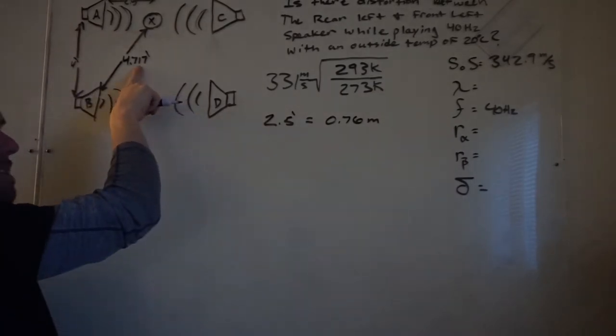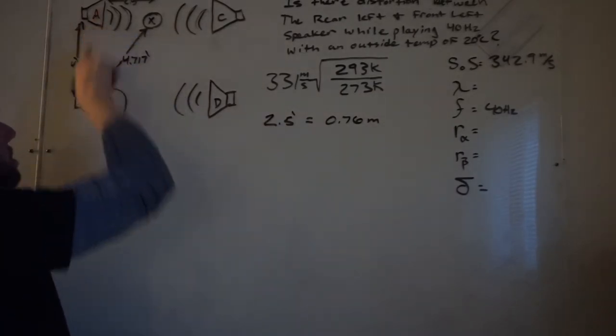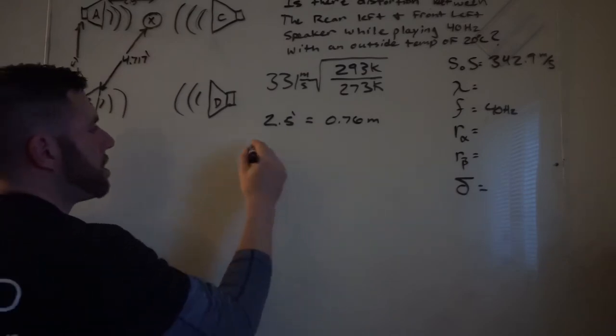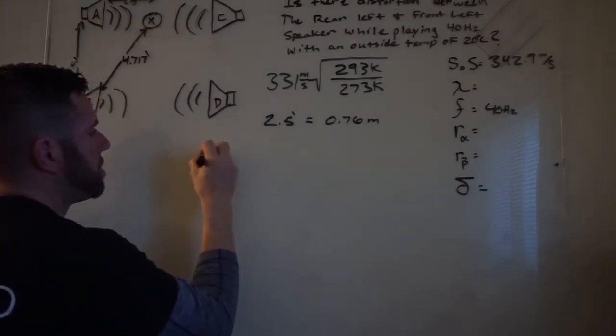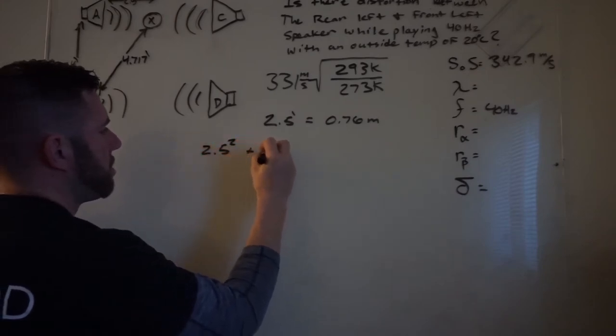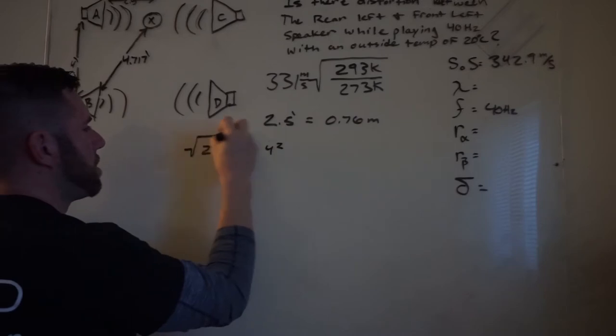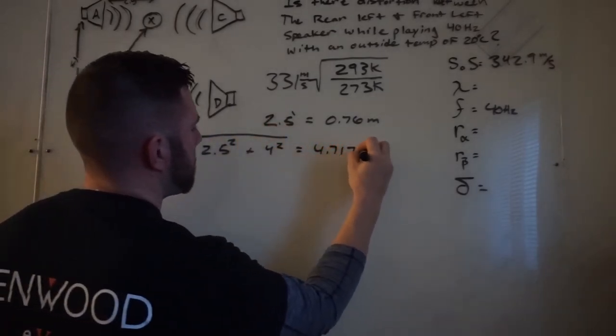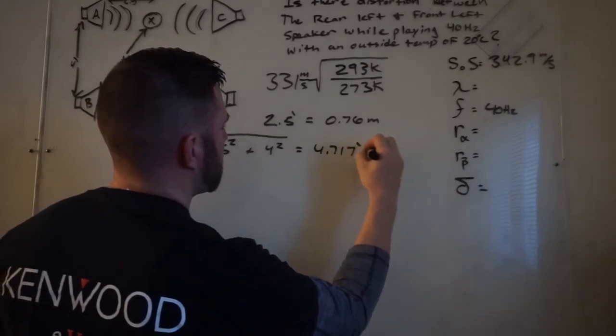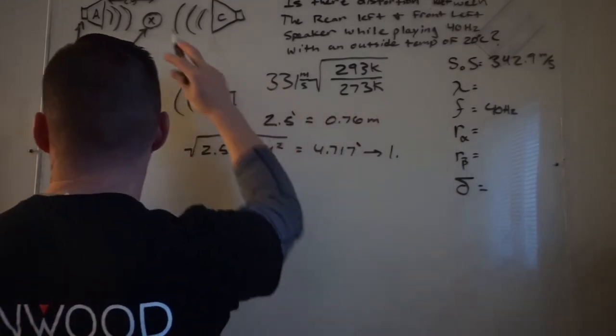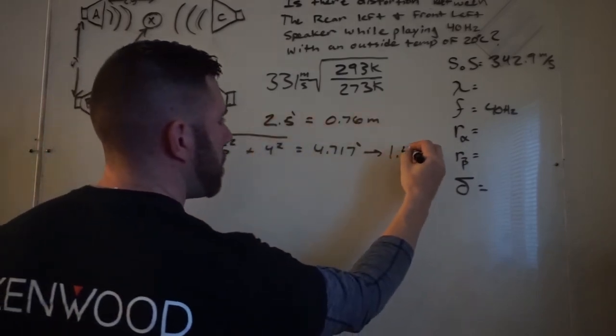And to get this value right here, if all you know is the distance to the back speaker and the distance to the center, you need to do Pythagorean theorem. Which is going to be 2.5 squared plus 4 squared. That's going to be 4.717, which is known as 1.4 meters.